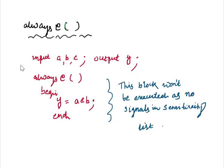If you write always @() with empty parentheses — no signal, no asterisk — that means there is no sensitivity list. Then the block will never be evaluated or executed, because there is no signal inside, so there is no signal change. If there is no signal and no change in signal, it will definitely not be evaluated or executed. We should be aware of this condition: always @() with a blank sensitivity list.